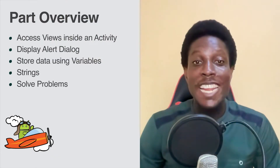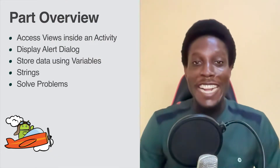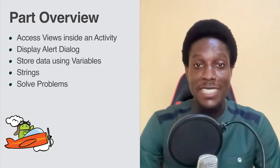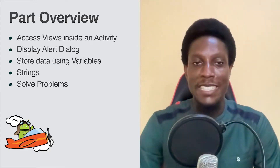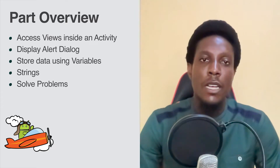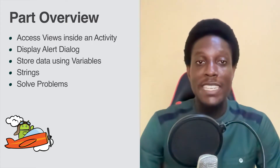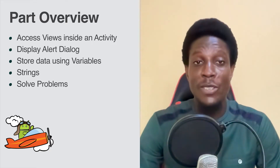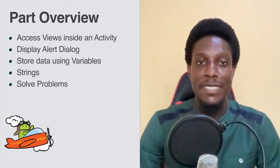In this part, you'll learn how to make BoozeEye interactive. You'll learn how to access the views you just created inside a component called an activity. You'll start by making the button display an alert dialog when clicked. You'll learn how to get the value of the slider and store the data. You'll also learn more about strings.